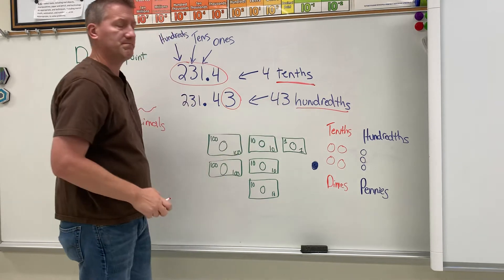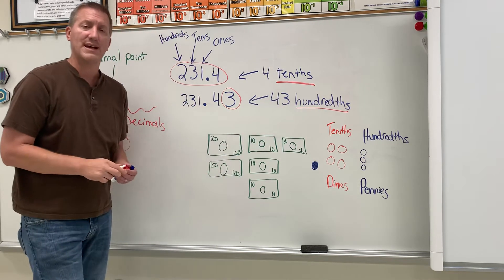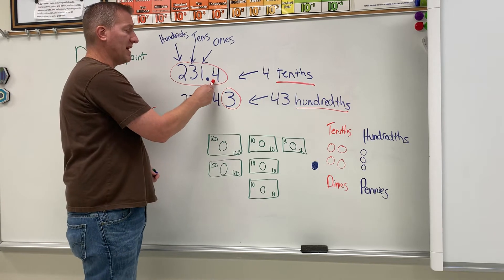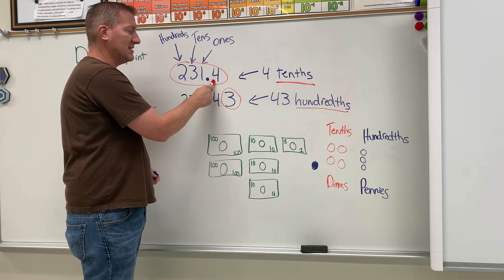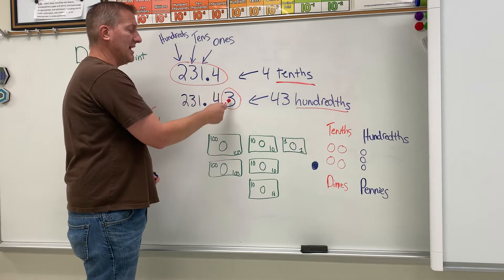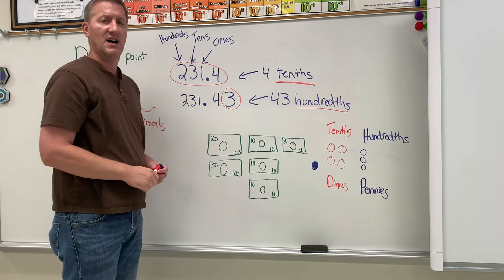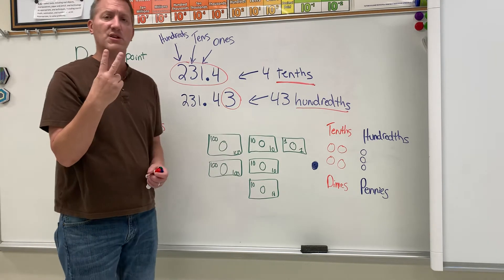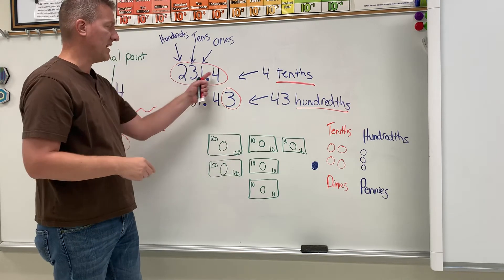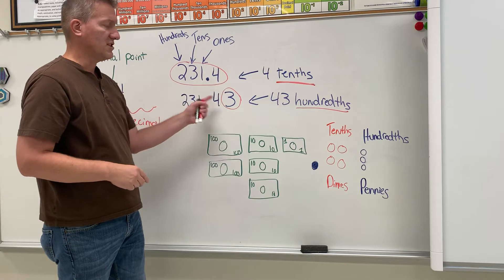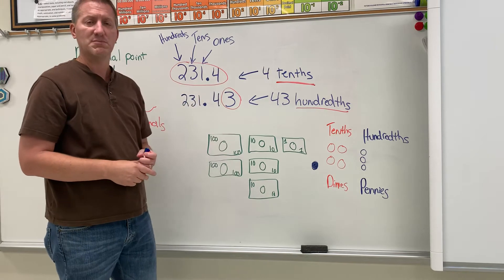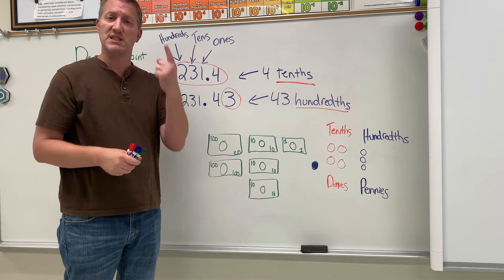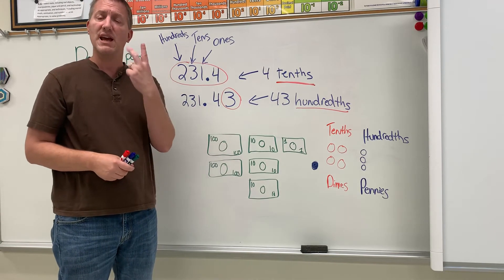So that's how you would say that one. The first place value is the tenths, the next place value is the hundredths. Those are the only two place values to the right of the decimal that you're gonna learn this year — just tenths and hundredths.